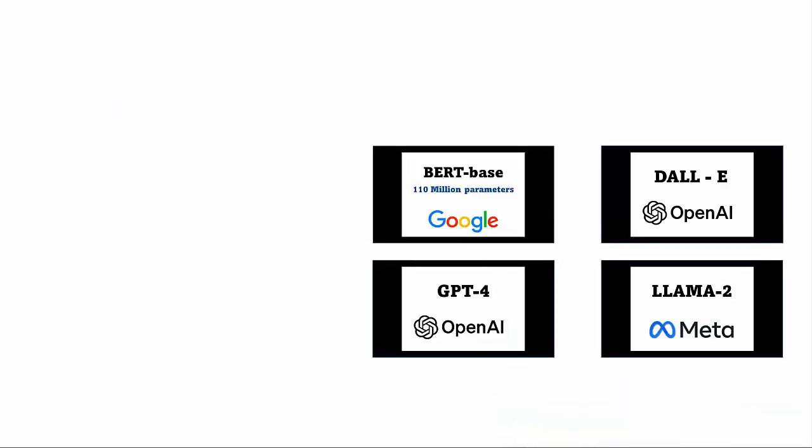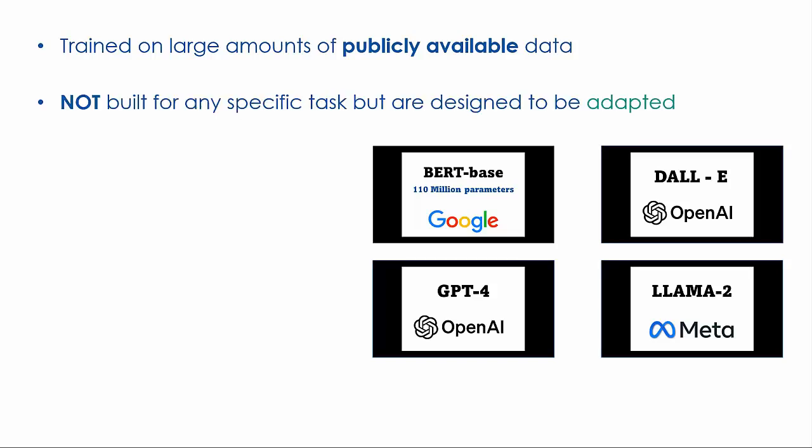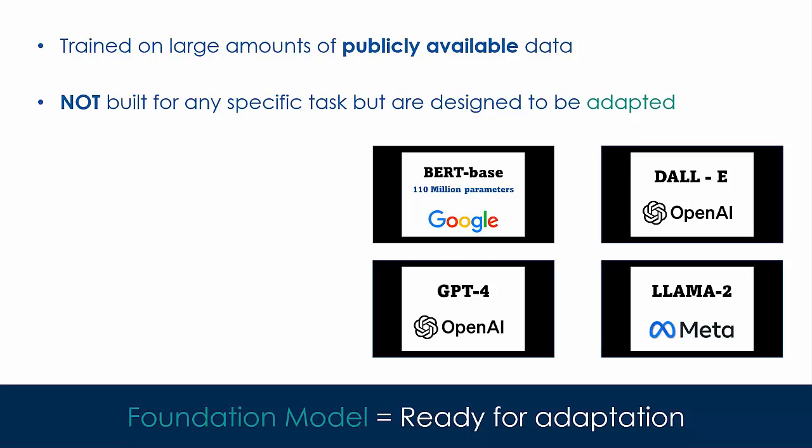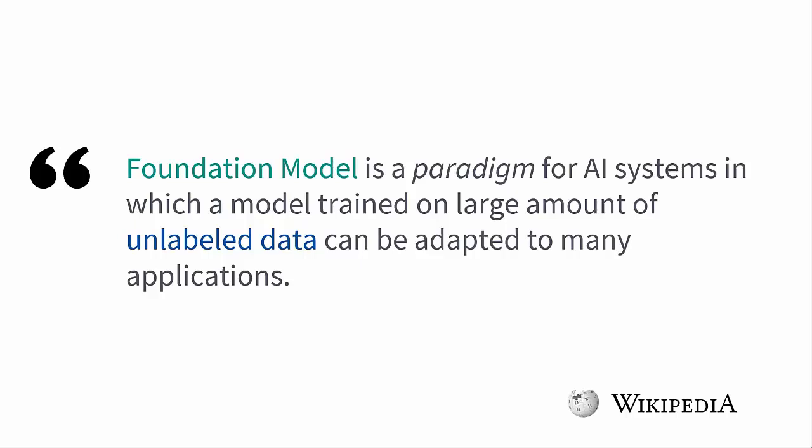So far in this lesson, I have referred to these four models. There is something common among these models. The first is that all of these models have been trained on large amounts of publicly available data. And the second aspect is that these models were not built for any specific tasks, but they are designed to be adapted. Such models are referred to as foundation models. Let me give you a more formal definition. Foundation model is a paradigm for AI systems in which a model trained on a large amount of unlabeled data can be adapted to many applications. I picked up this definition from Wikipedia.